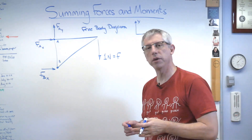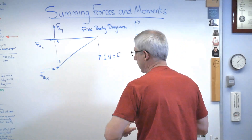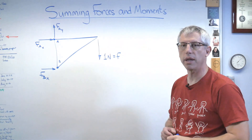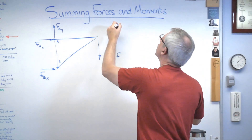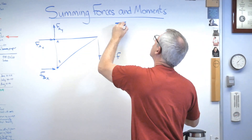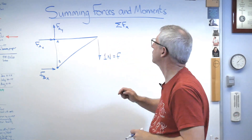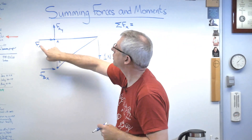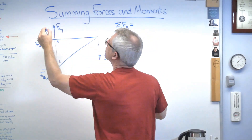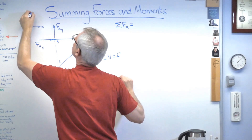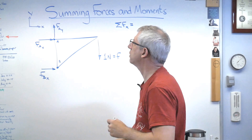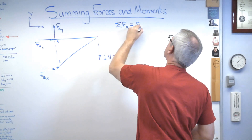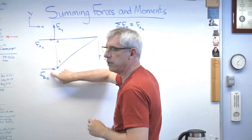Step three is to sum the forces and sum the moments. Let's start by summing forces in the x-direction. That Greek letter sigma is a capital sigma meaning 'sum' — you see that all over the place. Let me draw my coordinate system back up here so we don't get confused. I have FAx in the positive x-direction, and FBx also in the positive x-direction.